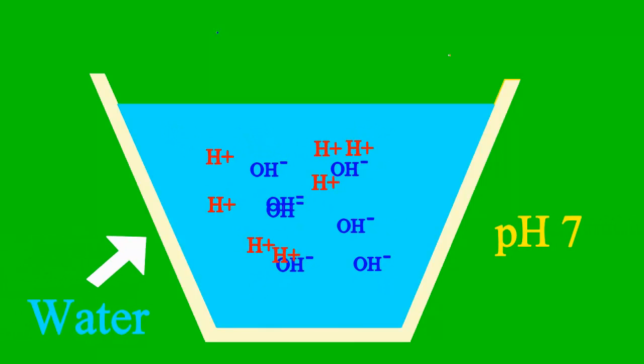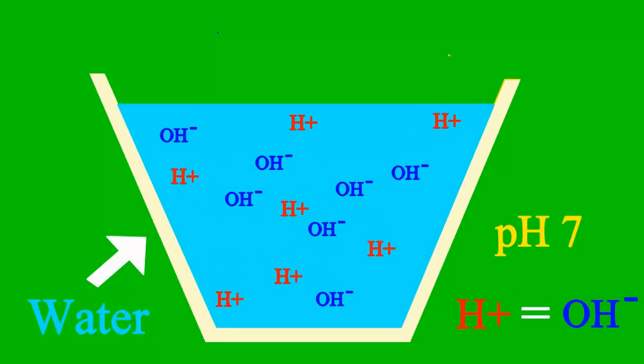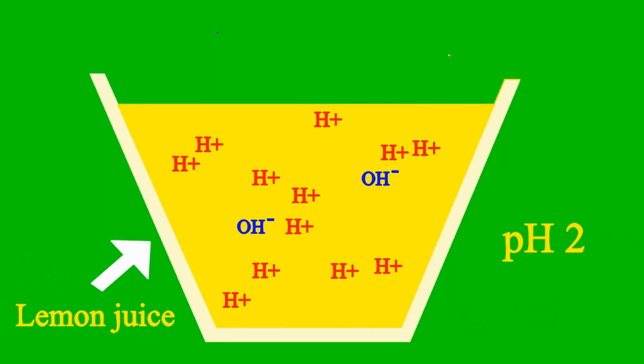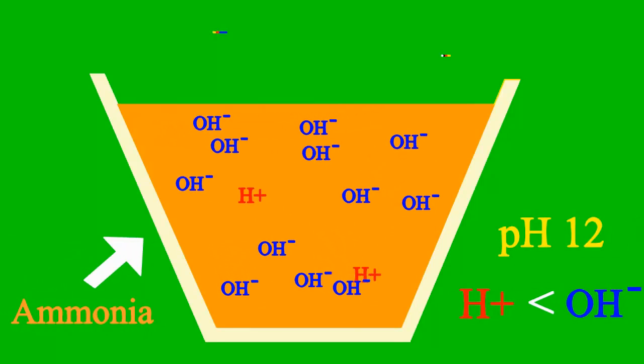When the pH is 7, then it's a case where the sample is neither acid nor base. But less than 7, it's an acid. Say more than 7, it's a base all the way.